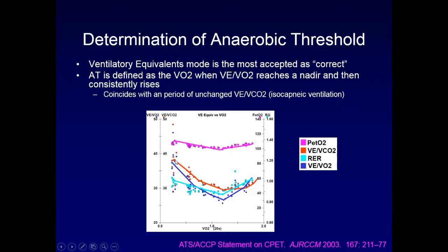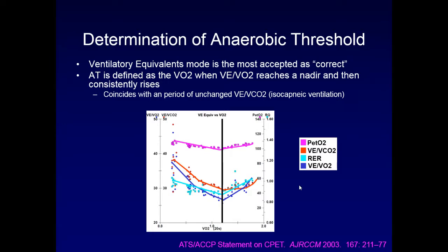Other clues on the graph also help identify anaerobic threshold. The ventilatory equivalence of carbon dioxide, or VE/VCO2, will come down to a nadir, plateau, and then come back up — the nadir point is also the anaerobic threshold. Additionally, the RER will come down to a nadir and then start to go back up again, and that's where you would roughly define anaerobic threshold.